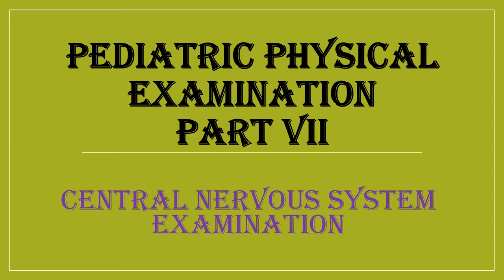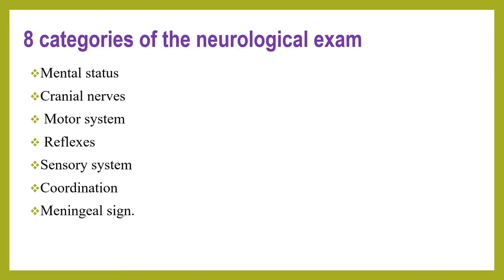Welcome to pediatric physical examination part 7. Today I will discuss central nervous system examination in pediatrics. The examination of the CNS has eight categories: mental status, cranial nerves, motor system, reflex, sensory system, coordination, and meningeal signs.